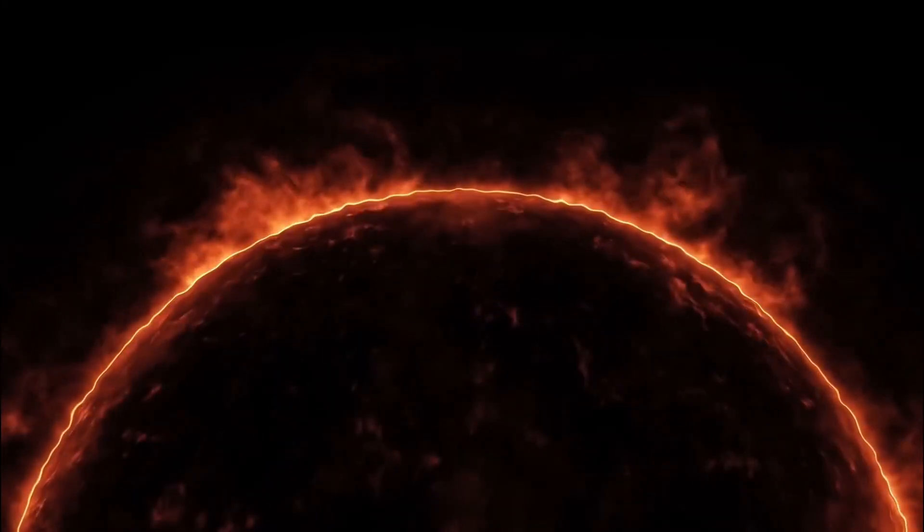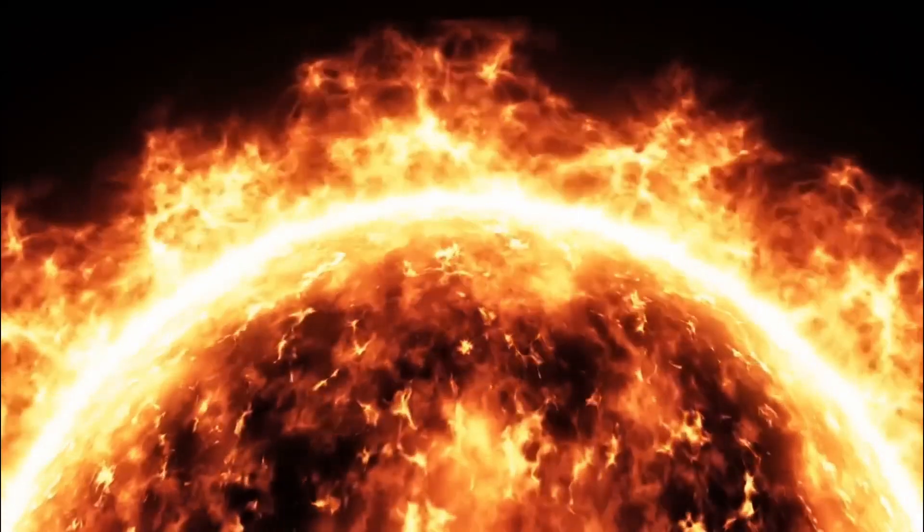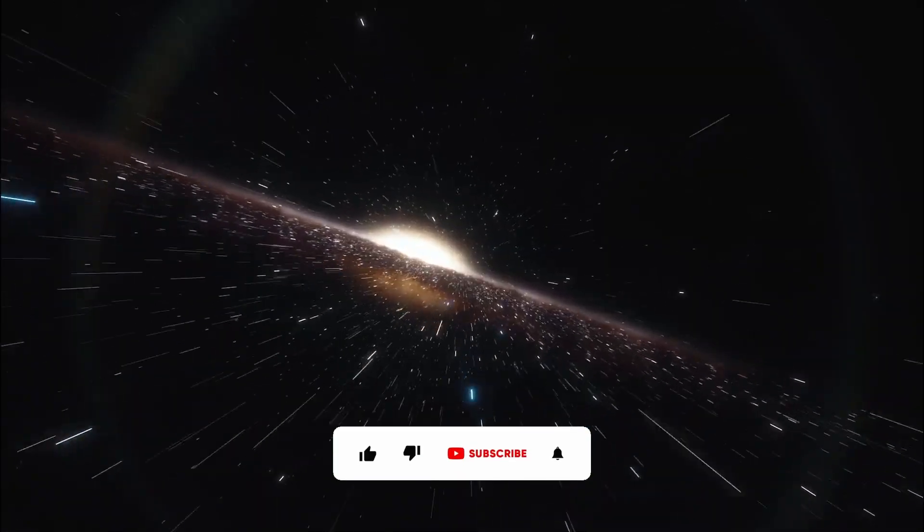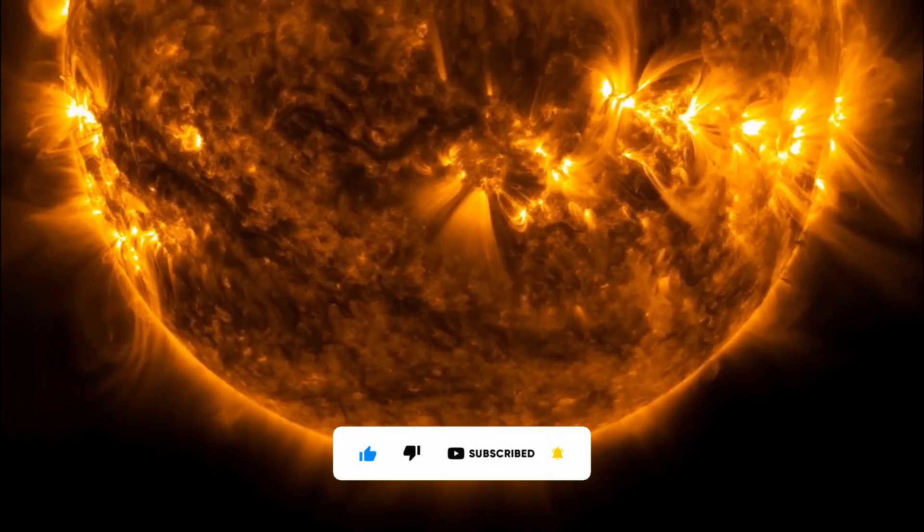If Polaris were to go supernova, it would likely be a spectacular event in our sky. The star would suddenly become incredibly bright, potentially outshining the moon and becoming one of the brightest objects in the night sky. This could last for days, weeks, or months.